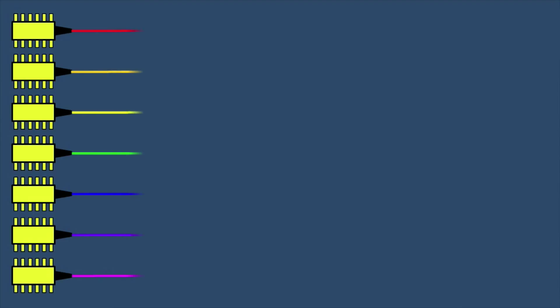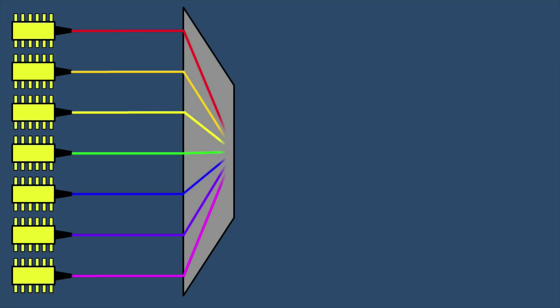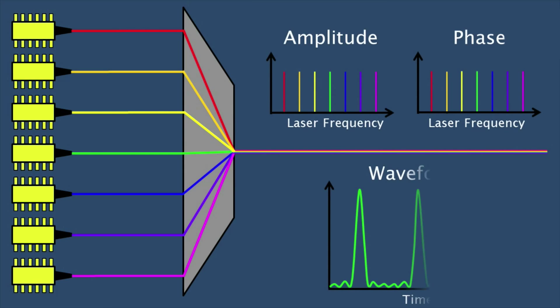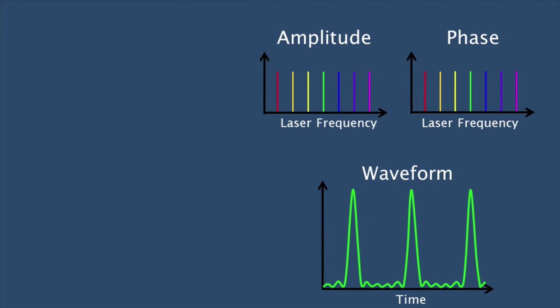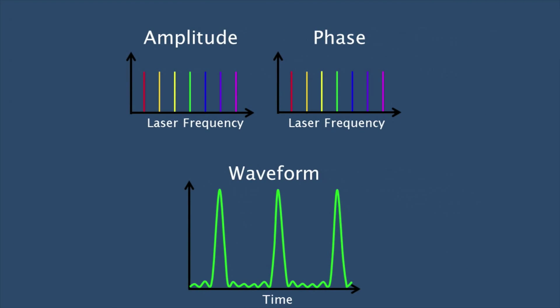My technique is based on the principle of Fourier synthesis, where we combine multiple lasers operating at different frequencies or wavelengths, and combine them together such that they interfere to form pulses. The shape of these waveforms can be altered by varying two key parameters of each of the lasers: the amplitude and the phase.